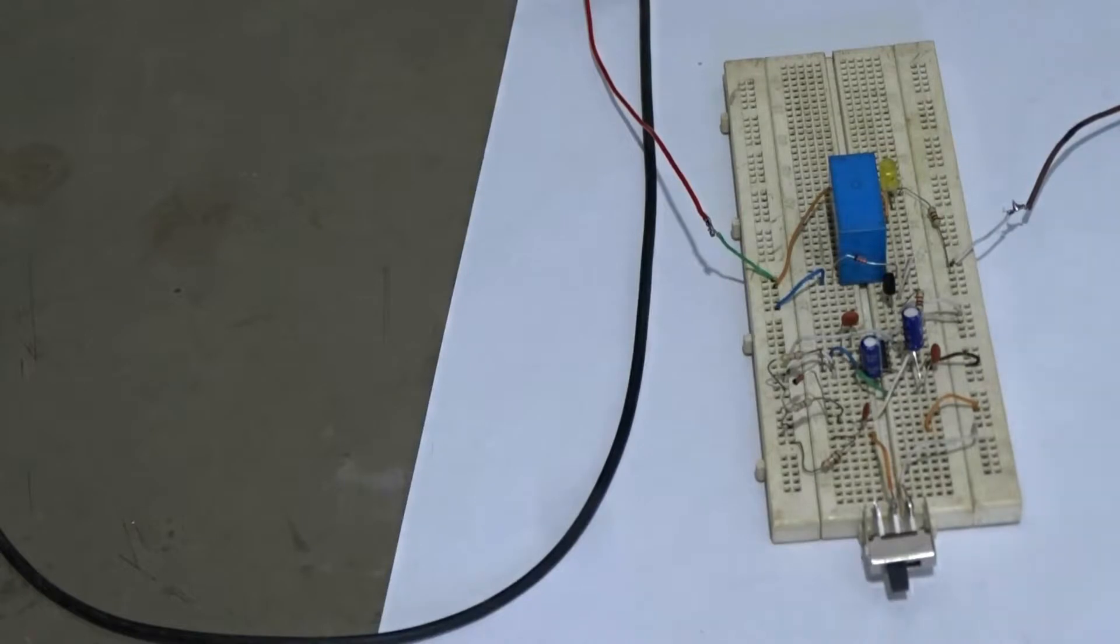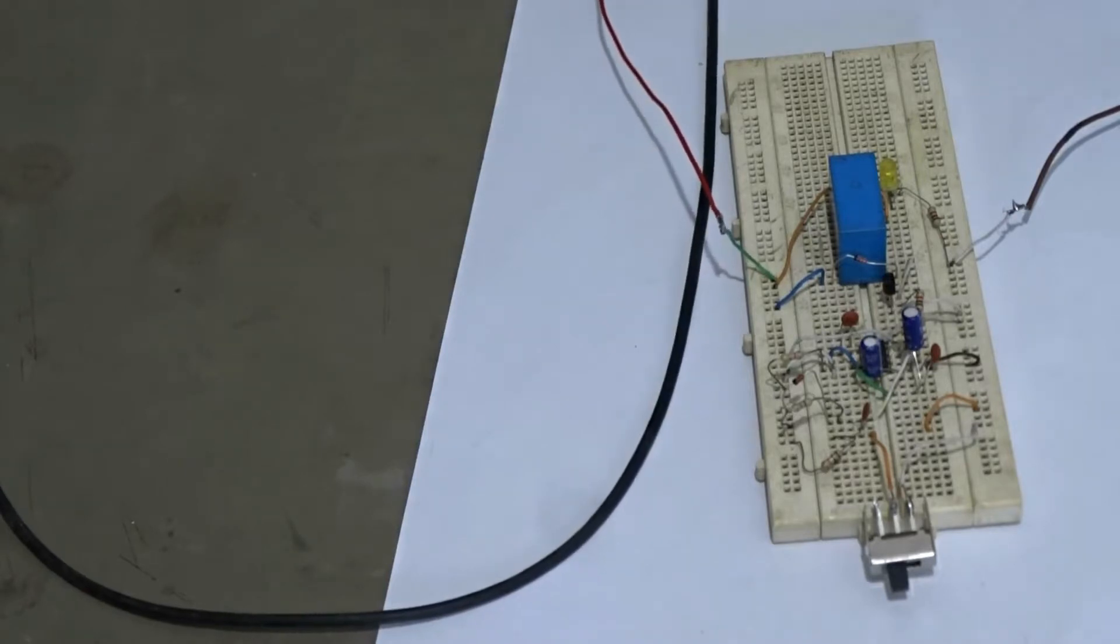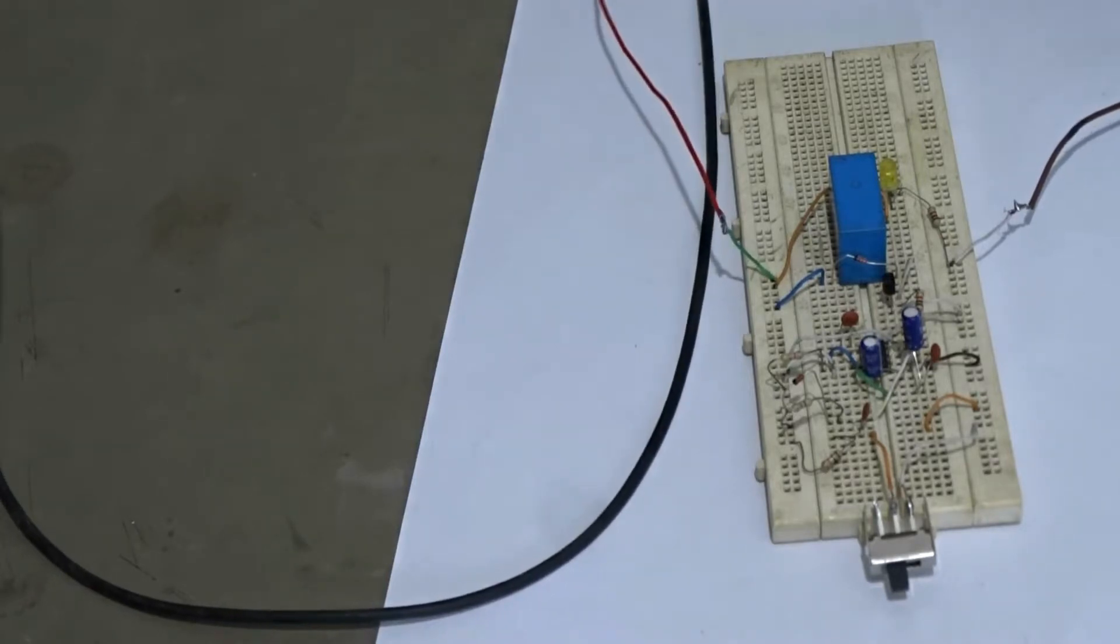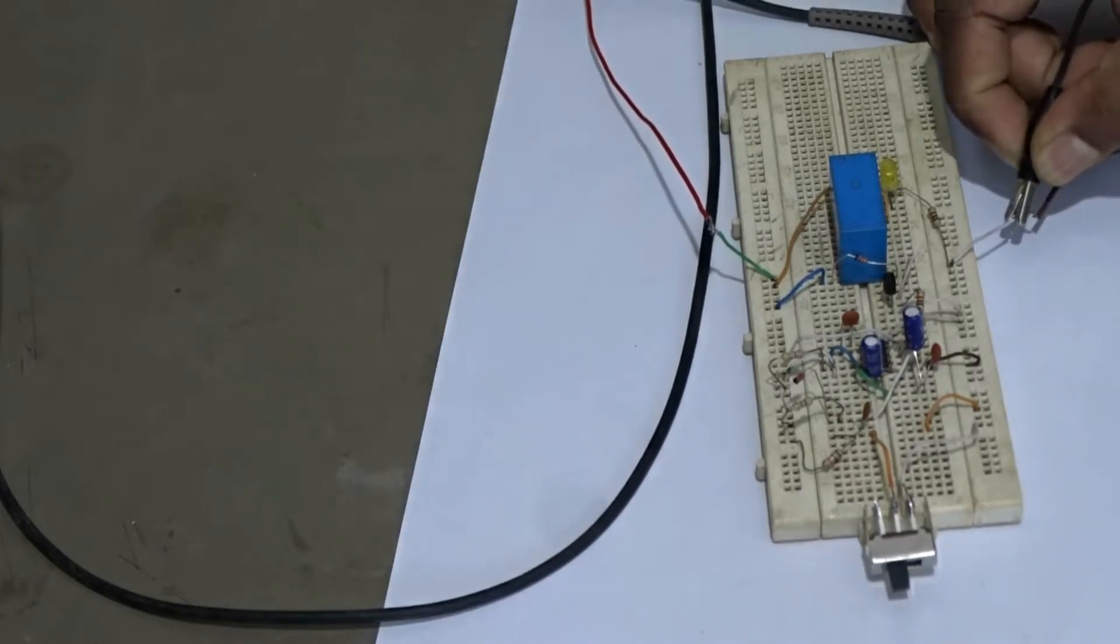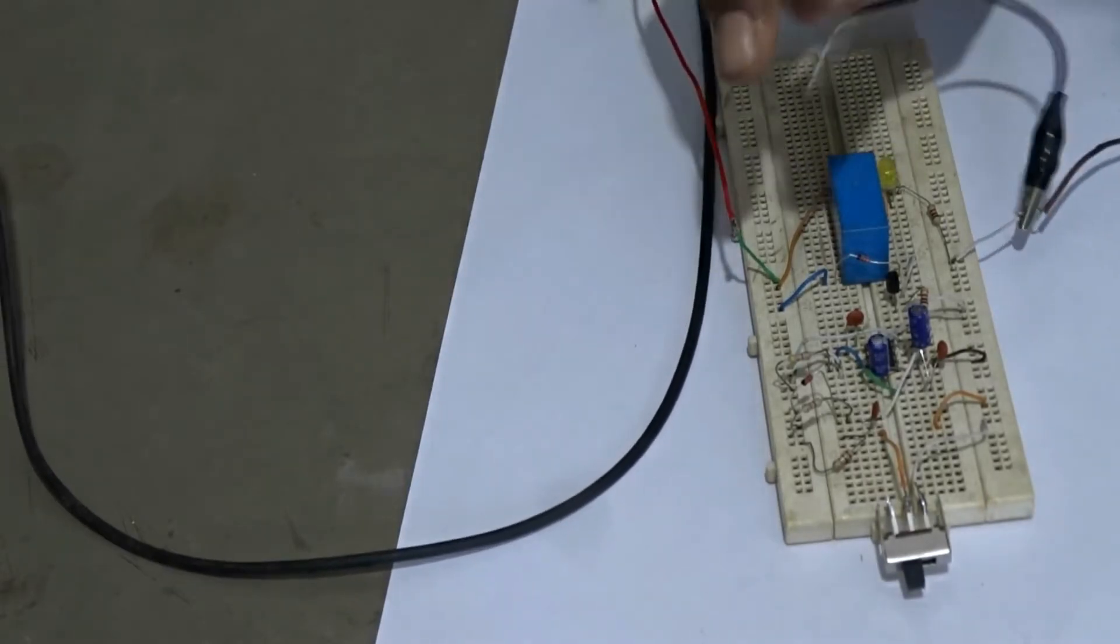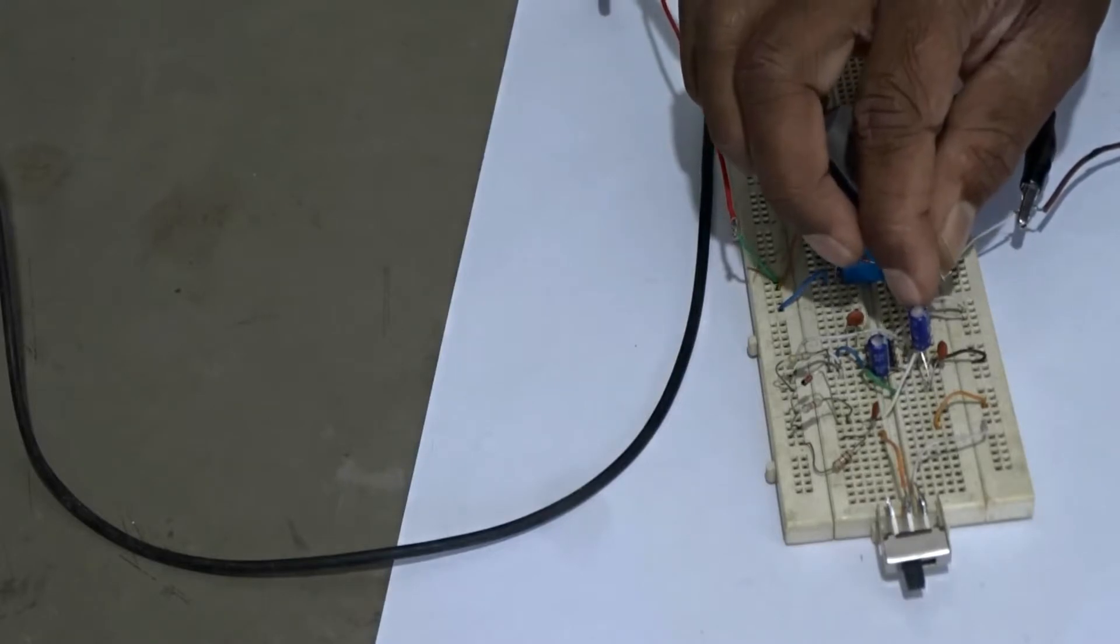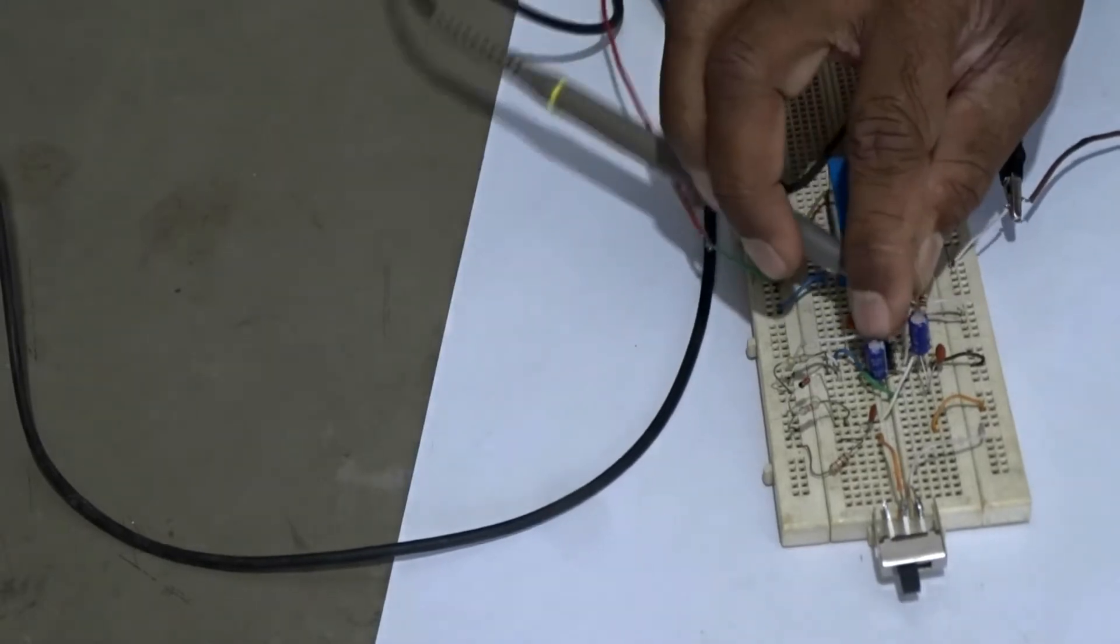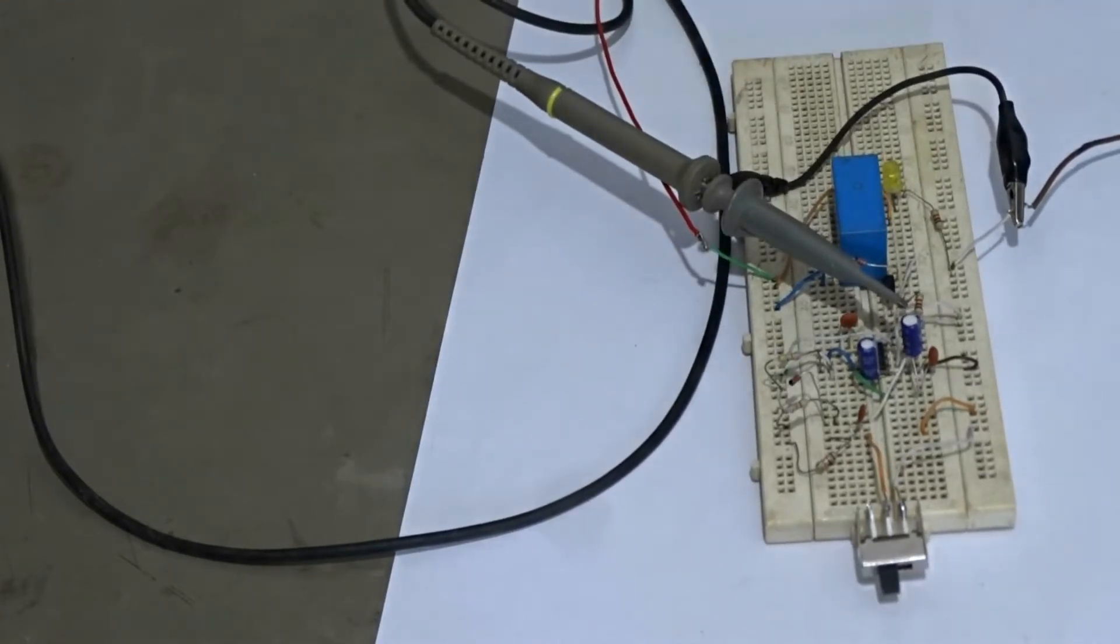Let's see how this circuit works using our oscilloscope. First, my ground lead connects to the negative, and my oscilloscope probe I connect to pin number 2 of the IC. Let's see how this works.